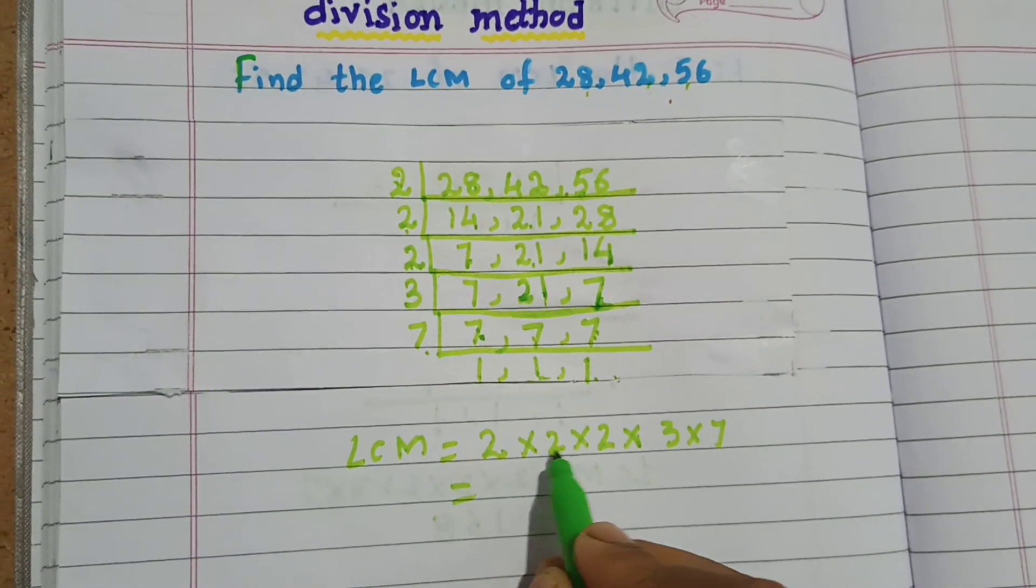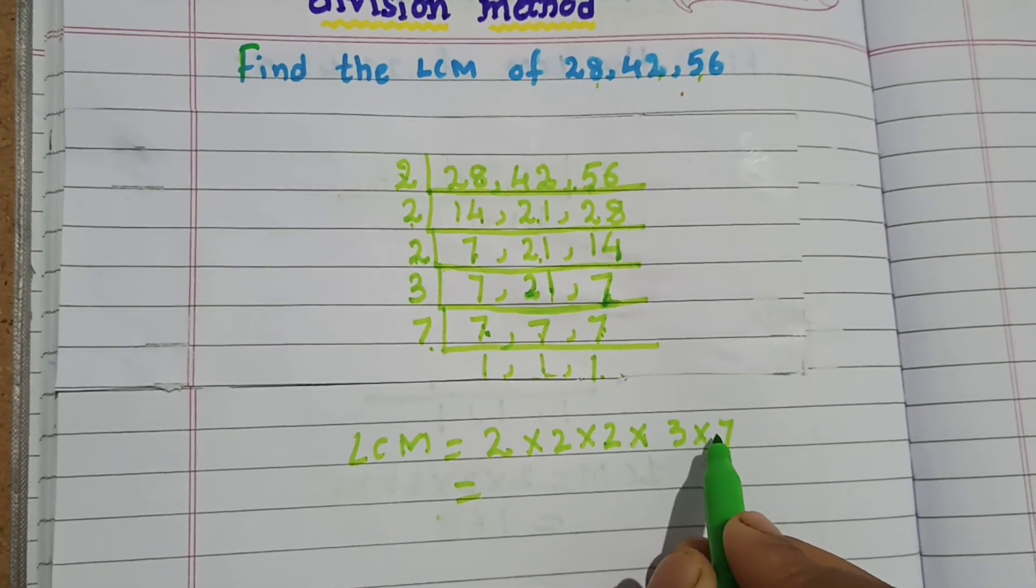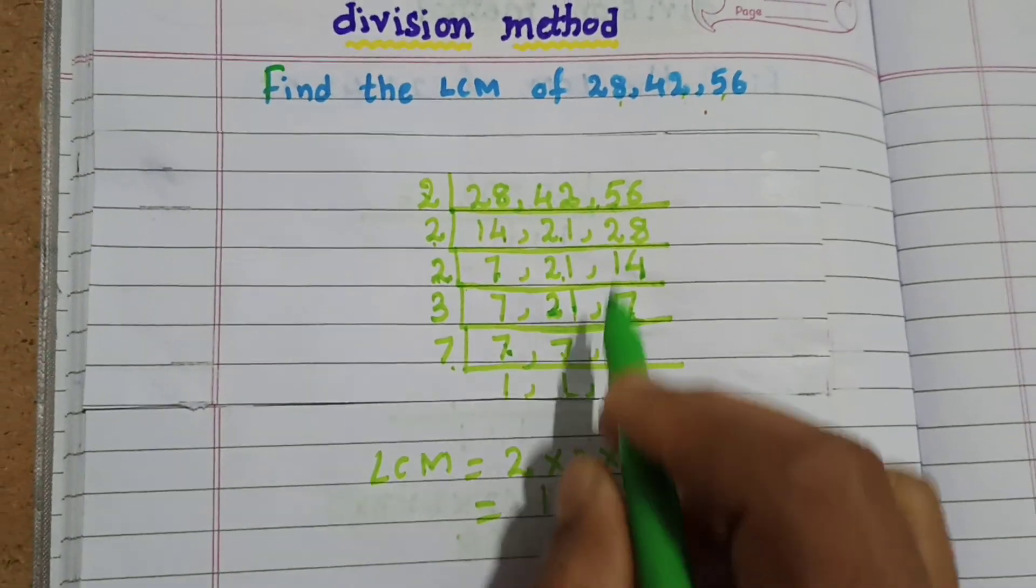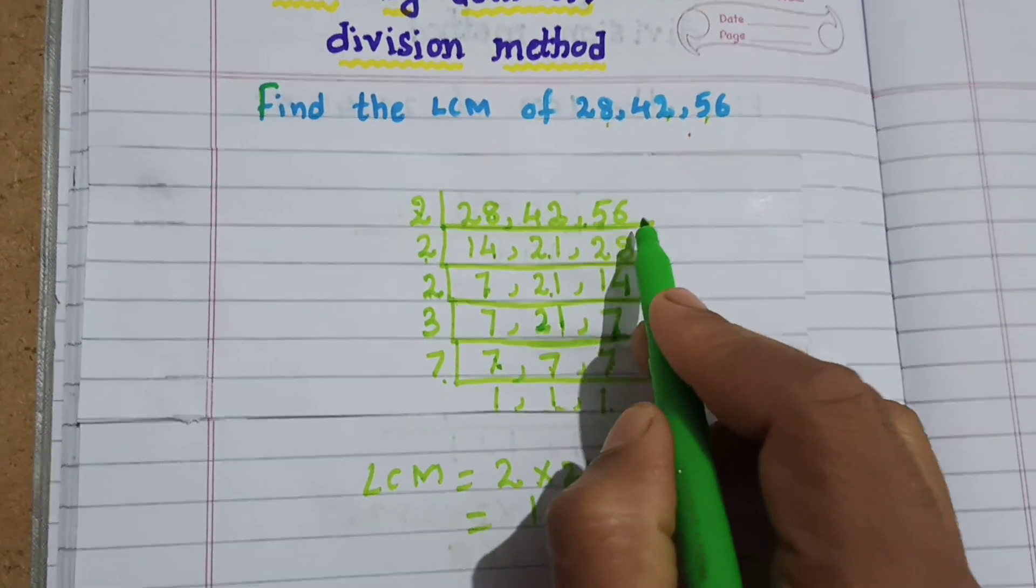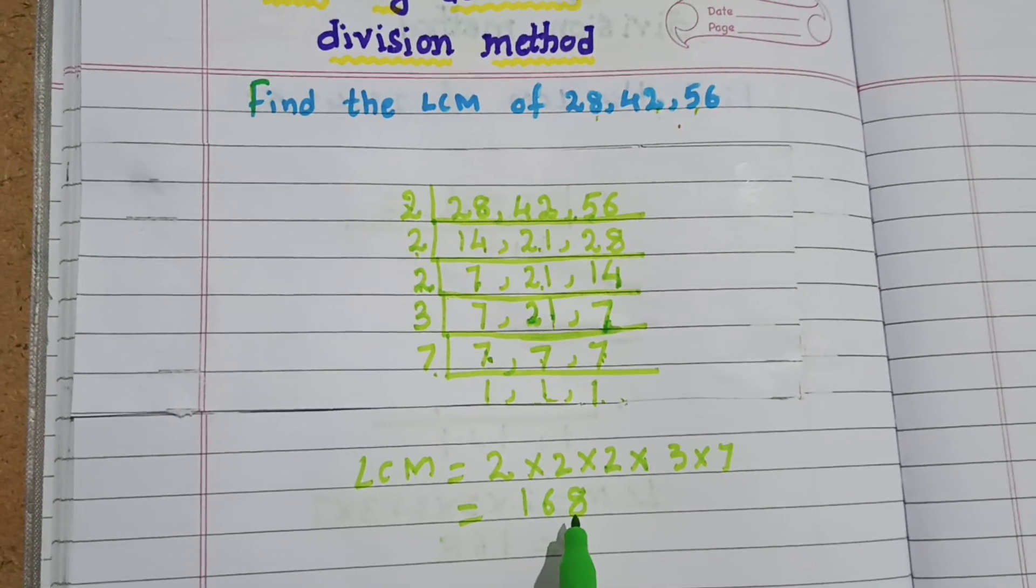2 times 2 is 4. 4 times 2 is 8. 8 times 3 is 24. 24 times 7 is 168. The LCM of 28, 42, 56 is equal to 168.